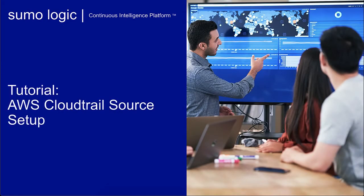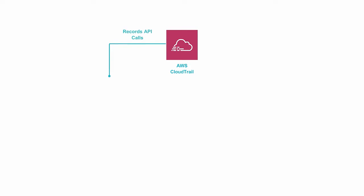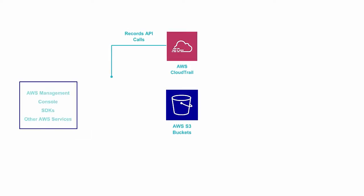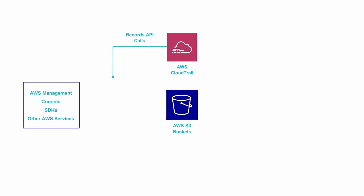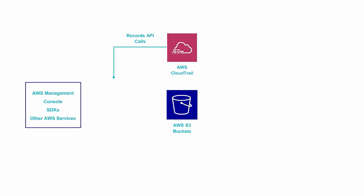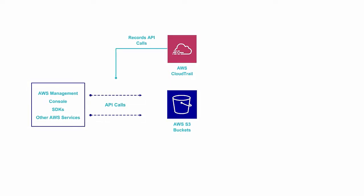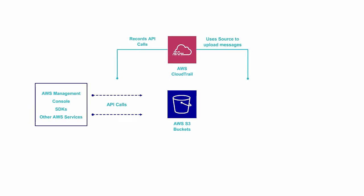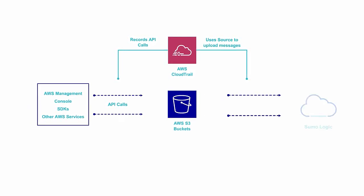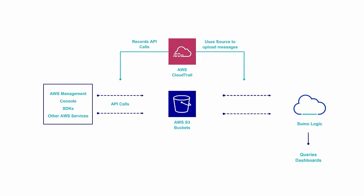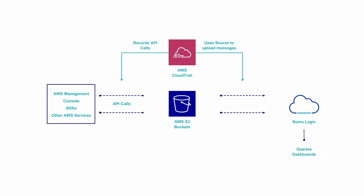Welcome to the tutorial for AWS CloudTrail sources. AWS CloudTrail records API calls made to AWS services, such as the AWS Management Console, SDK, and other AWS services, providing greater visibility into events in these services that, in turn, allow for security and operations forensics in Sumo Logic through pre-built queries and dashboards in our AWS CloudTrail app.